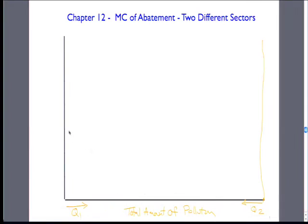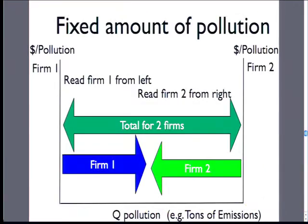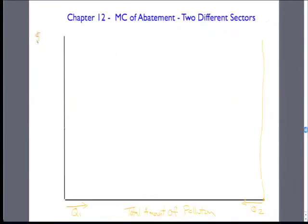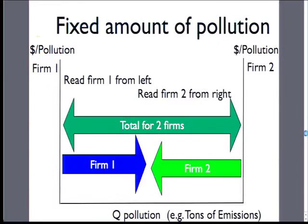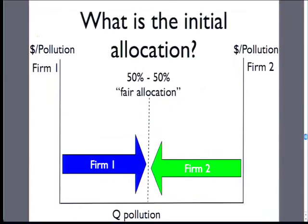We have different sectors. This is dollars per unit of pollution for firm one or sector one, and this is dollars per unit of pollution for firm two or sector two. We're adding up — the total amount that we can pollute is split between the two firms, the total tons of emissions. We have to start thinking about where is a fair allocation between the two firms — the question of who has property rights. Say there's a total amount that can be polluted. Who has the property rights? How do we decide the right allocation?